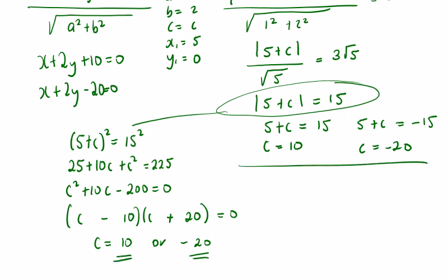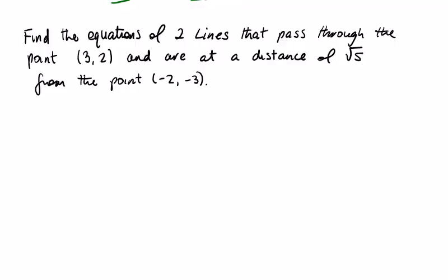That's a trickier type of perpendicular distance question. Pause the video and attempt this one: find the equations of two lines that pass through the point (3, 2) and are at a distance of root 5 from the point (−2, −3).